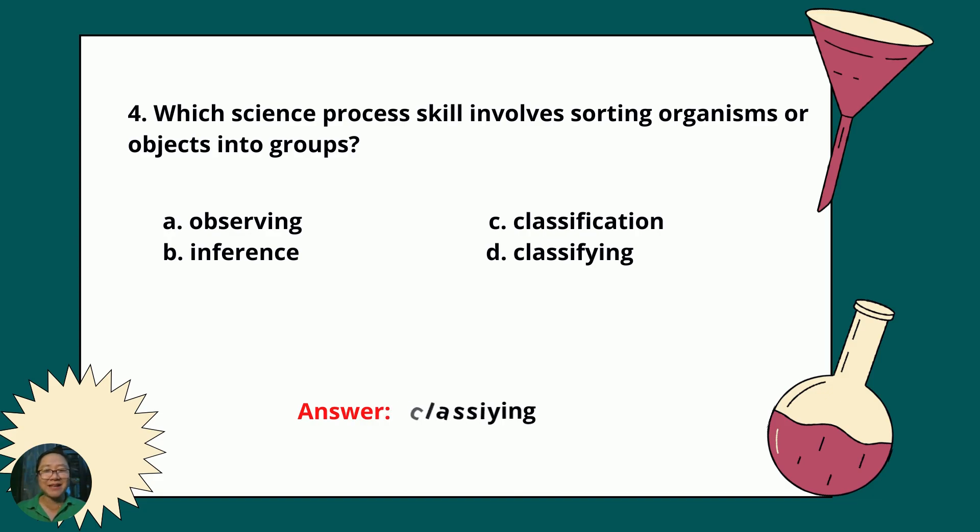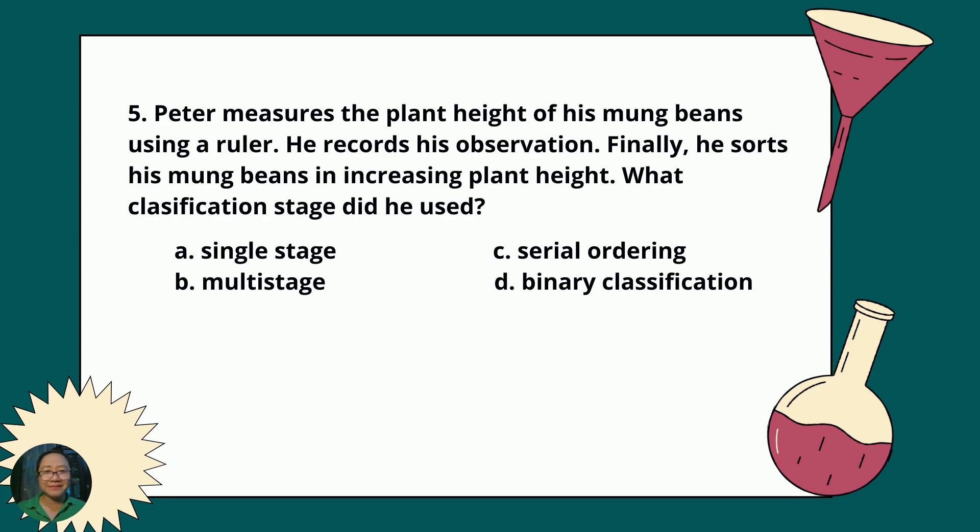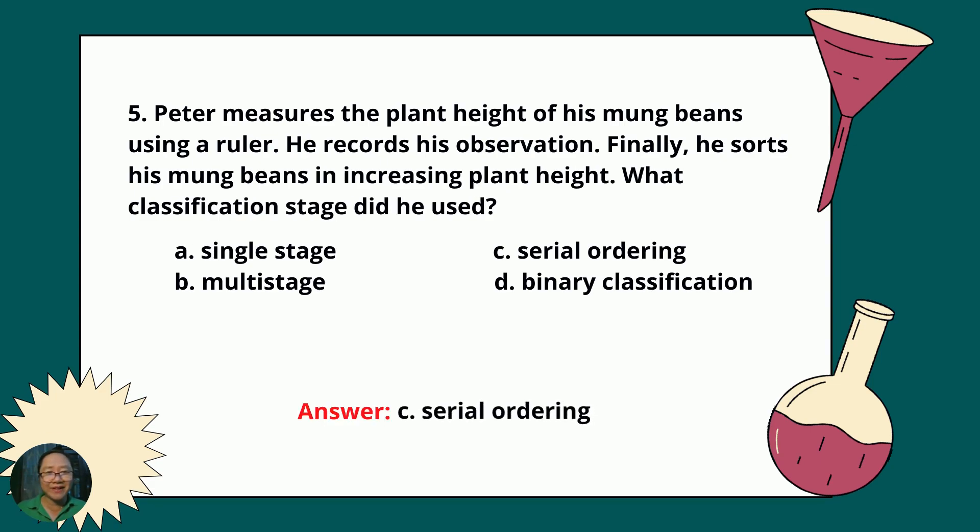The answer is classifying. Number 5, Peter measures the plant height of his mung beans using a ruler. He records his observation. Finally, he sorts his mung beans in increasing plant height. What classification stage did he use? A, single-stage; B, multi-stage; C, serial ordering; or D, binary classification? What's your answer? The answer is C, serial ordering.